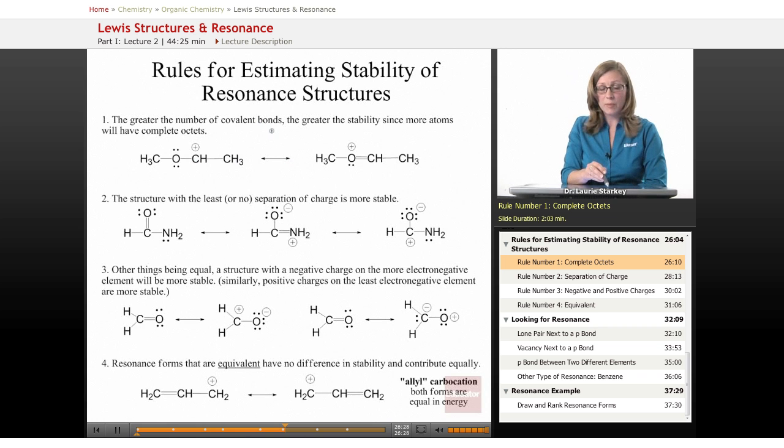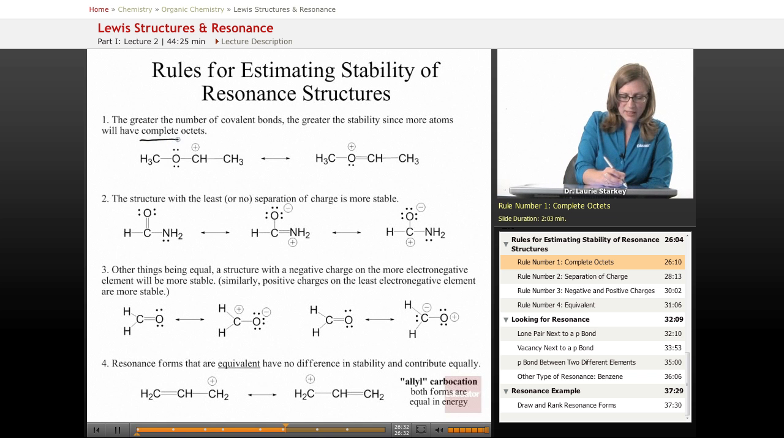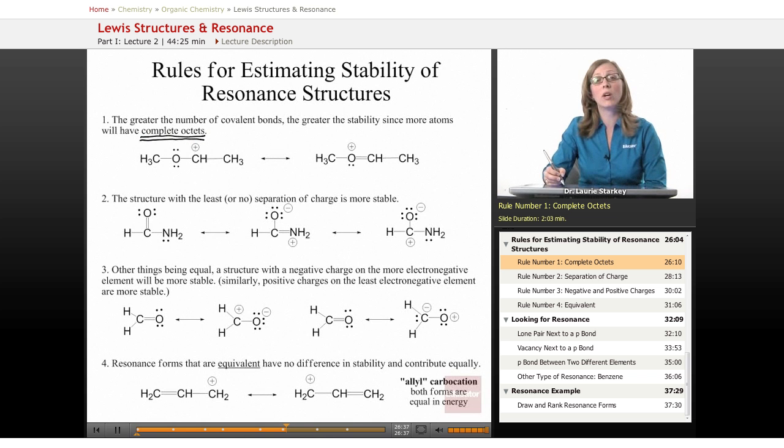What we'll find is that the greater number of covalent bonds, the greater the stability, because more atoms will have complete octets. So the number one thing we're always going to be looking for to evaluate a Lewis structure is the more we have complete octets, the better the Lewis structure. That's always our first thing we want to take a look at.